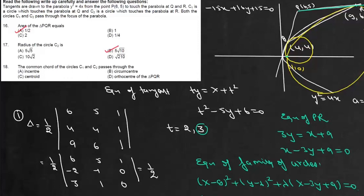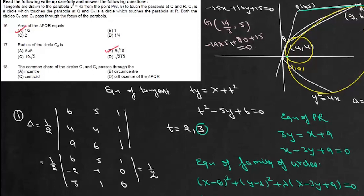To determine which special point lies on this chord, we check the centroid of triangle PQR. The centroid is ((6+4+9)/3, (5+4+6)/3) = (19/3, 5). Substituting: -15(19/3) + 16(5) + 15 = -95 + 80 + 15 = 0. So the centroid lies on the common chord. That is option C. The correct options are A, B, and C.